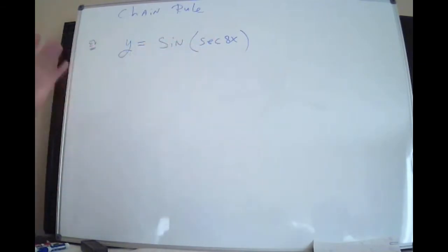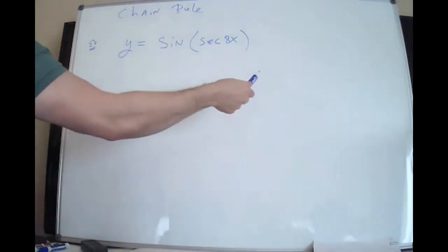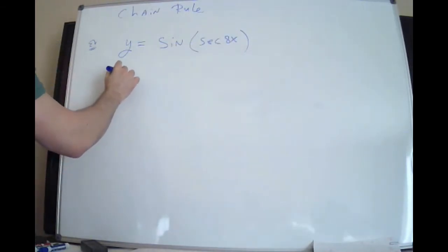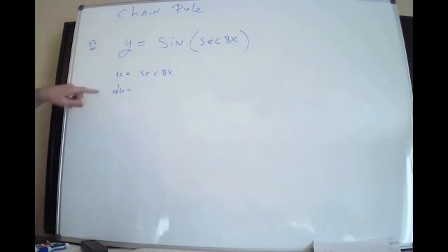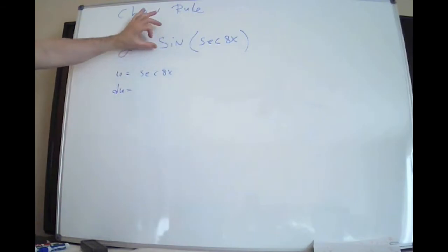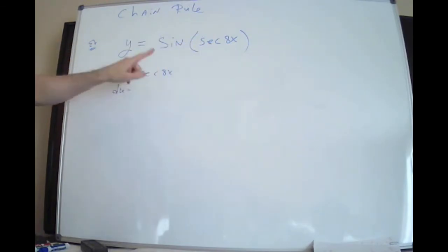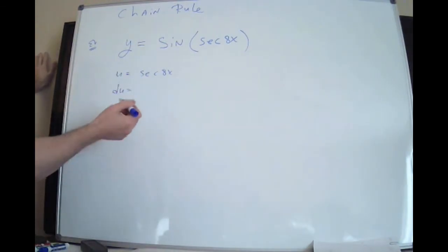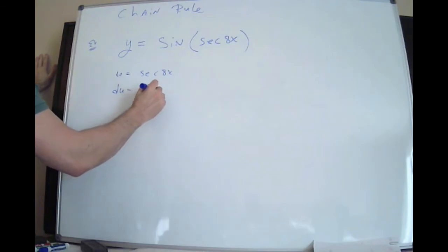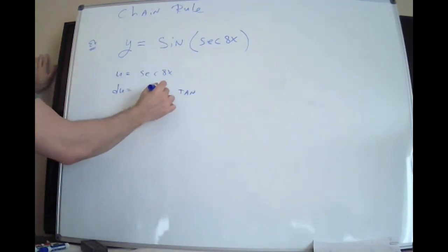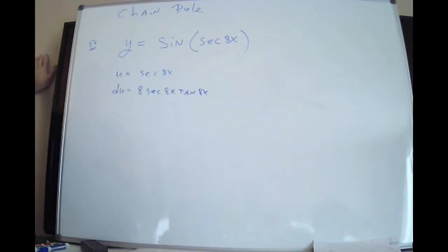The last example is a double chain rule: sine of secant(8x). For the outer function sine(u), the derivative is cosine(u) times du. But my u this time is secant(8x), which itself requires a chain rule — that's why it's a double chain rule. To find du, I use the result I just computed: the derivative of sec(8x) is sec(8x) tan(8x) times 8. So du involves the chain rule again.